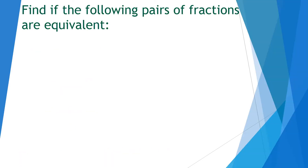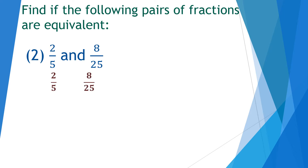Let us solve one more question. Question number 2: 2 upon 5 and 8 upon 25. Let us compare the equivalent fractions by the cross multiplication method. Cross multiplication means multiplying in cross — we multiply the numerator of one side by the denominator of the other side. So 2 multiplied by 25 is equal to 5 multiplied by 8.